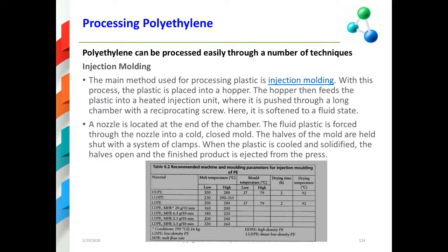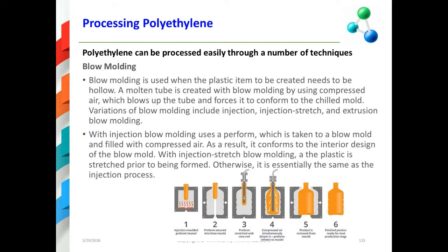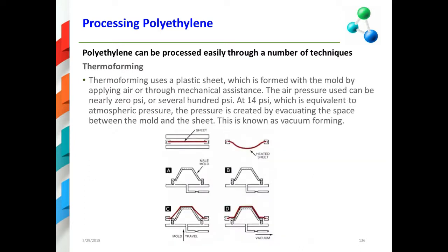It's easily possible to process polyethylene by a variety of different techniques. A lot of polyethylene parts are injection molded. You can also process polyethylene through blow molding — a lot of the bottles we see are blow molded. You can process polyethylene through thermal forming; one application of thermal forming is porta-potties, like those you might see at a stadium or concert.